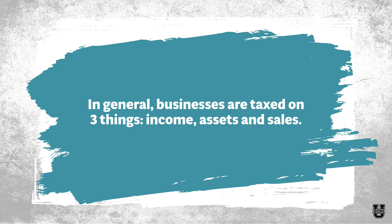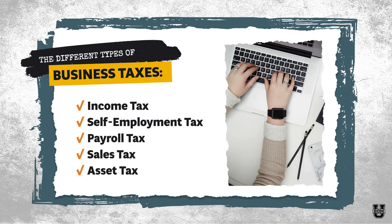Let's start by doing a quick overview of business taxes. In general, businesses can be taxed on three things: their income, their assets, and their sales. Depending on where you're located, it does not necessarily mean that you will be taxed on all three, but these are the three general types of taxes. The types of taxes we're going to review today are: income tax, self-employment tax, payroll tax if you have employees, sales tax, and asset taxes.